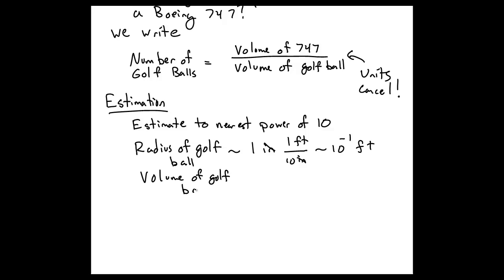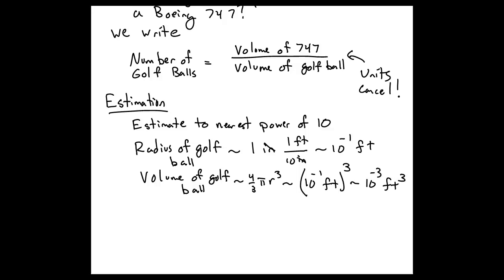So therefore, the volume of a golf ball, which is 4 thirds pi r cubed, well, forget about the 4 thirds pi, that's r cubed. So it gets me something like 10 to the minus 3 feet cubed for the volume of a golf ball.